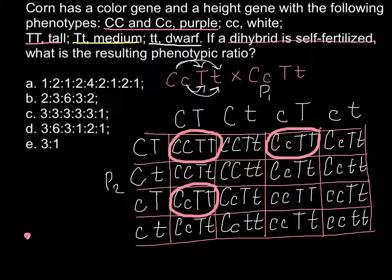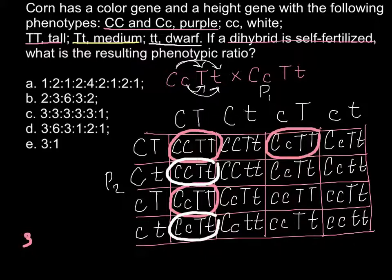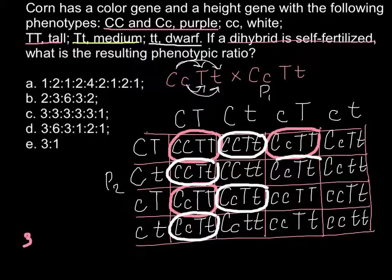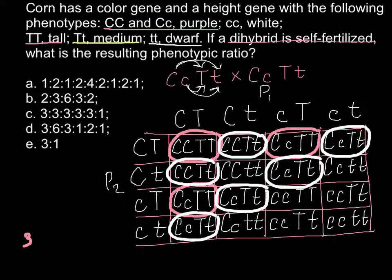Next, let's find purple and medium. Here is purple and medium, and here is purple and medium, this one also purple and medium, and this one also purple and medium. And here — purple and medium again. Let's count: 1, 2, 3, 4, 5, 6. So we have 6 purple and medium.